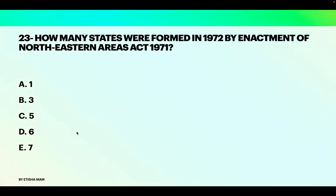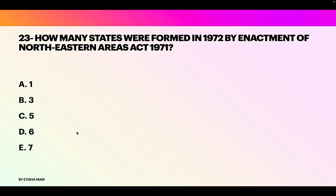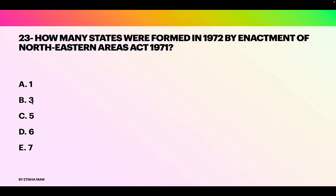How many states were formed in 1972 by the enactment of the Northeastern Areas under the Act of 1971? There were three states that were formed.